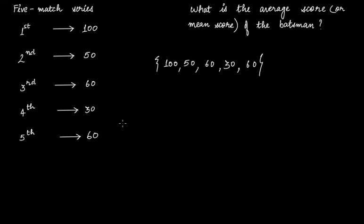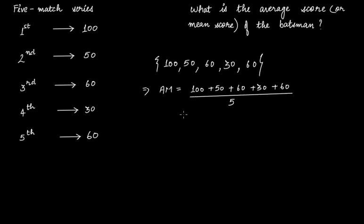If you have to calculate a value that represents this data set — a representative value that explains something to the user — that is the average, and in this case we can use arithmetic mean. Calculating arithmetic mean: 100 plus 50 plus 60 plus 30 plus 60, divided by five. One hundred plus fifty is 150, plus sixty is 210, plus thirty is 240, plus sixty is 300. Three hundred divided by five equals 60 — that is 60 runs.